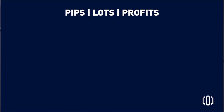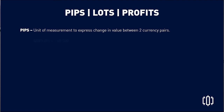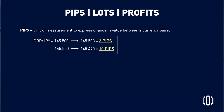Now let's talk about how you actually make money — pips, lots, and profits. Pips are the unit of measurement to express the change in value between two currencies. For example, GBP/JPY at 145.500 — if the market moves to 145.503, that's a 3-pip move. If it moves from 145.500 to 145.490, that's a decrease of 10 pips. Regardless of whether the market goes up or down, pips is the term used for that movement.